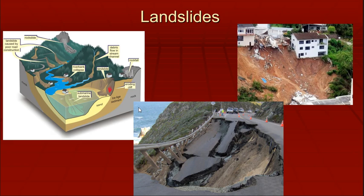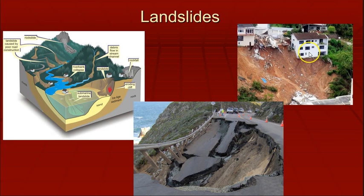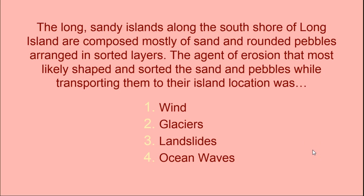Landslides are the next geologic hazard — so we've got earthquakes and tsunamis, volcanoes, and now landslides. This is not a seismic or plate tectonic function; it's where you have weakened areas and gravity pulls the material down. Here are pictures of actual landslides — this is Highway 101 in the Big Sur. The long sandy islands along the south shore of Long Island are composed mostly of sand and rounded pebbles in sorted layers; the agent of erosion that shaped and sorted them was ocean waves.